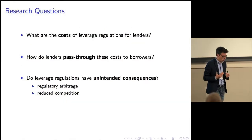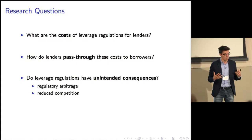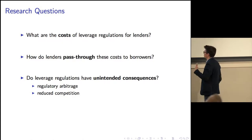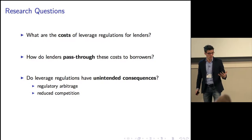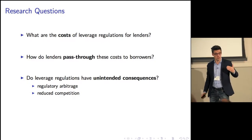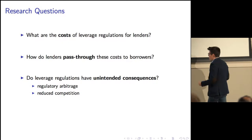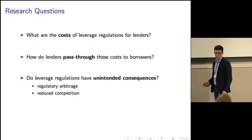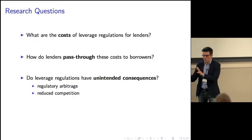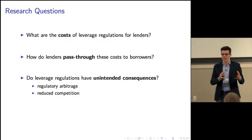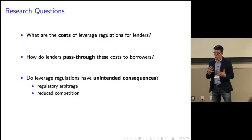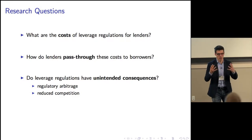My paper today is going to focus on three interrelated questions. The first is: what is the cost of the leverage regulation for lenders? The second is: how will lenders pass on this cost to borrowers? And third: does this leverage regulation have unintended consequences in equilibrium, such as regulatory arbitrage and reduced competition? This is going to be a partial equilibrium approach that focuses on one side of the problem — the cost side — and there are great people with a more macro flavor that look at the cost and the benefit side together.